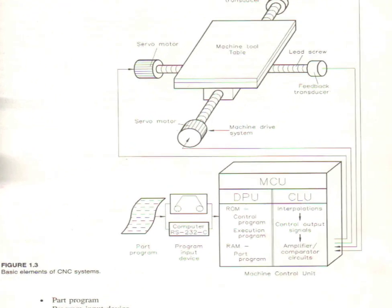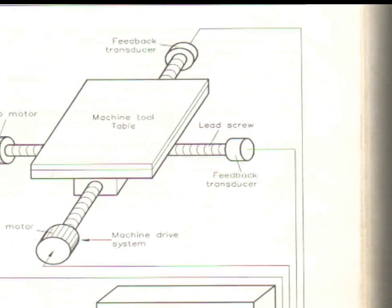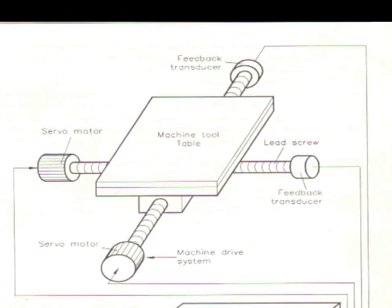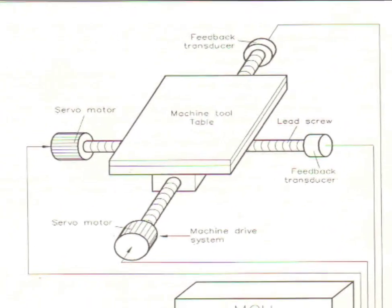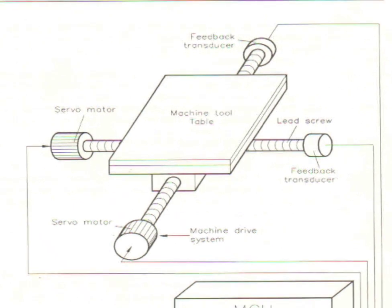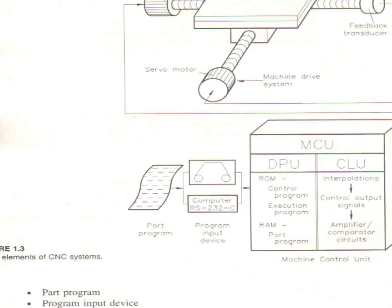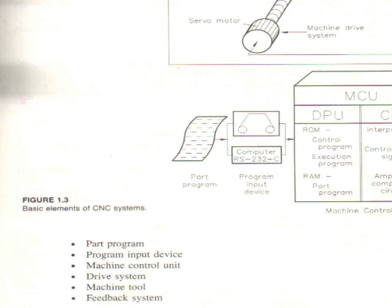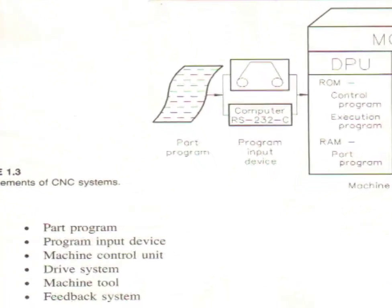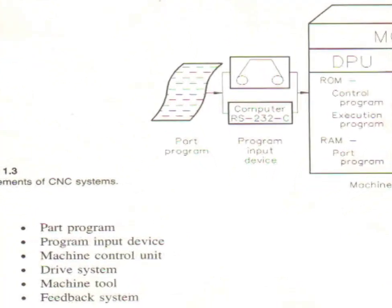This is the diagram of the CNC machine. It consists of a machine tool table, servo motors — two servo motors — a feedback transducer, and a lead screw. The basic elements are: part program, program input device, machine control unit, drive system, machine tool, and feedback system.